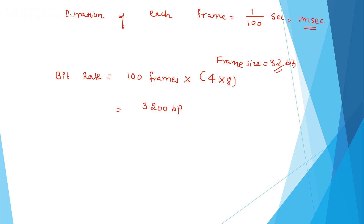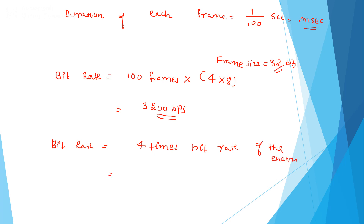We can also verify: bit rate equals 4 times the bit rate of the channel. The bit rate of the channel is 100 frames × 1 byte × 8 bits = 4 × 100 × 8 = 3200 bits per second. Either method — 100 frames × 32 bits, or 4 times the channel bit rate — gives the same answer of 3200 bps.